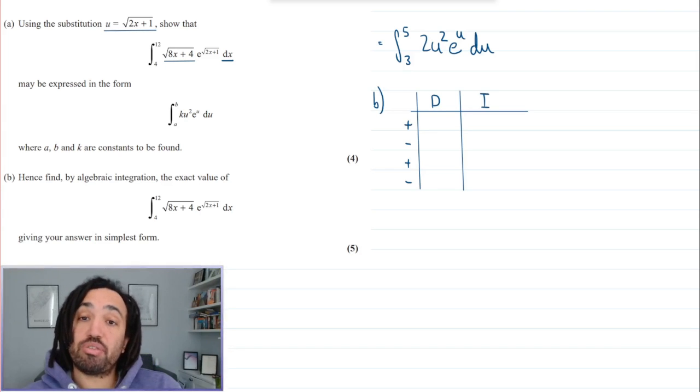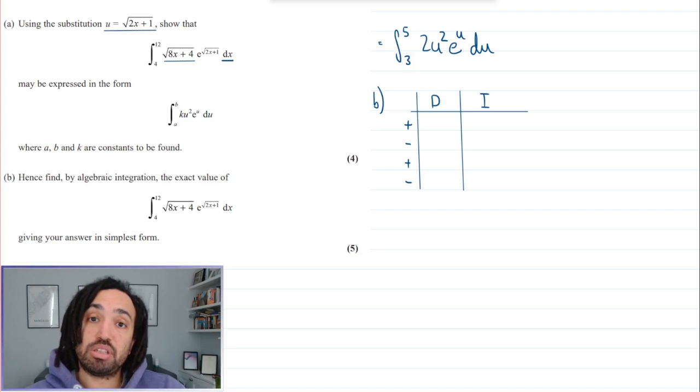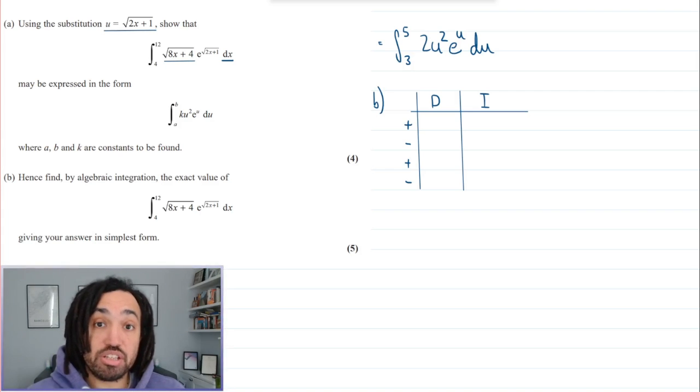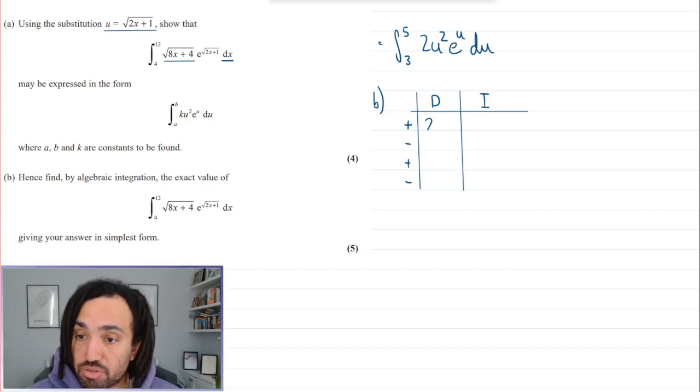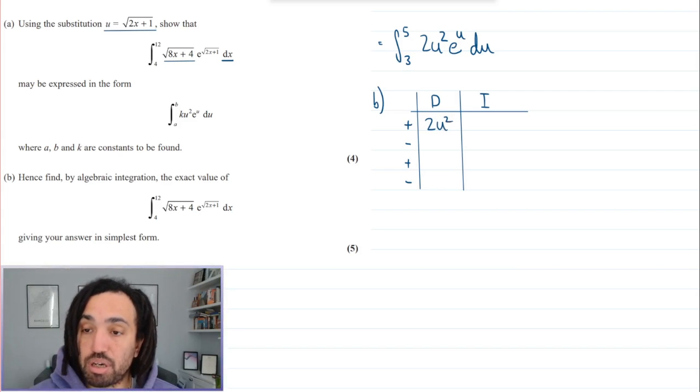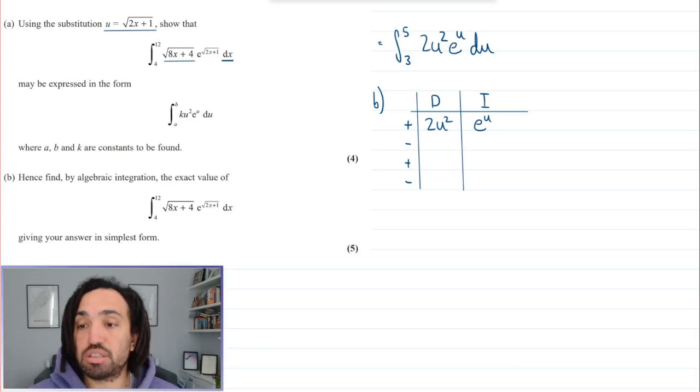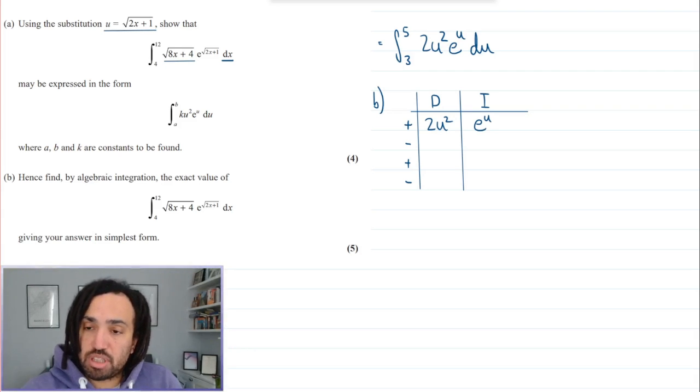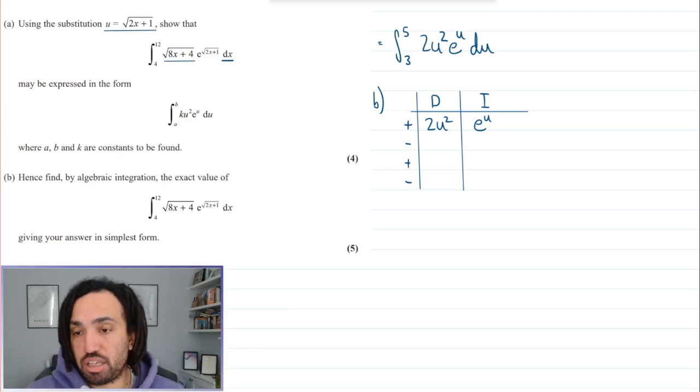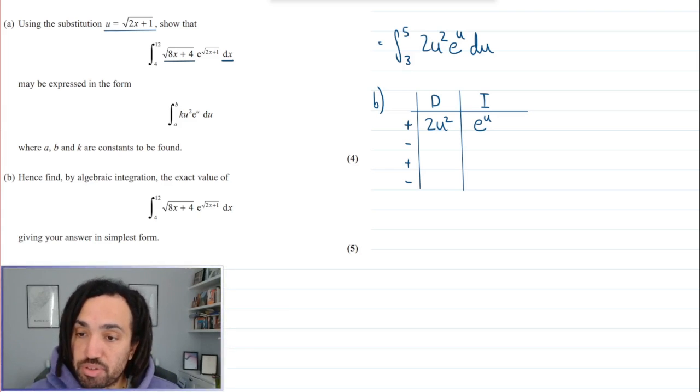This is the part we're going to differentiate, this is the part we're going to integrate. We always put the polynomial in the differentiation section. So this differentiates to 4u which then differentiates to 4 which then differentiates to zero. Now this would integrate to e to the u and it would continue to integrate to e to the u every single time.